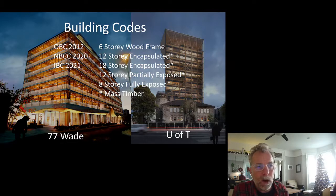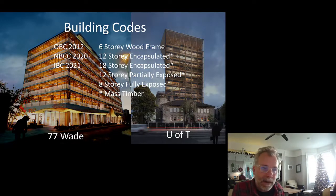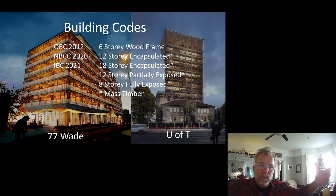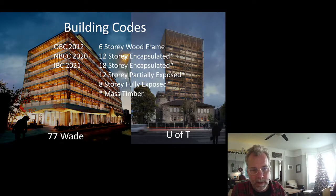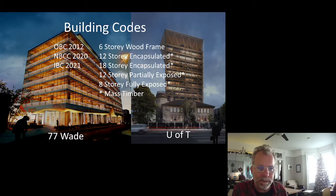The international building code 2021 is projected to allow 18-story encapsulated and eight-story fully exposed mass timber. The building codes are getting less and less stringent. We're doing an eight-story lab building right now with nine-meter spans and very heavy loads — the column size winds up being beyond what's reasonable and floor-to-floor heights are going to drive us into other solutions. We're getting close to the practical limit of mass timber anyway.